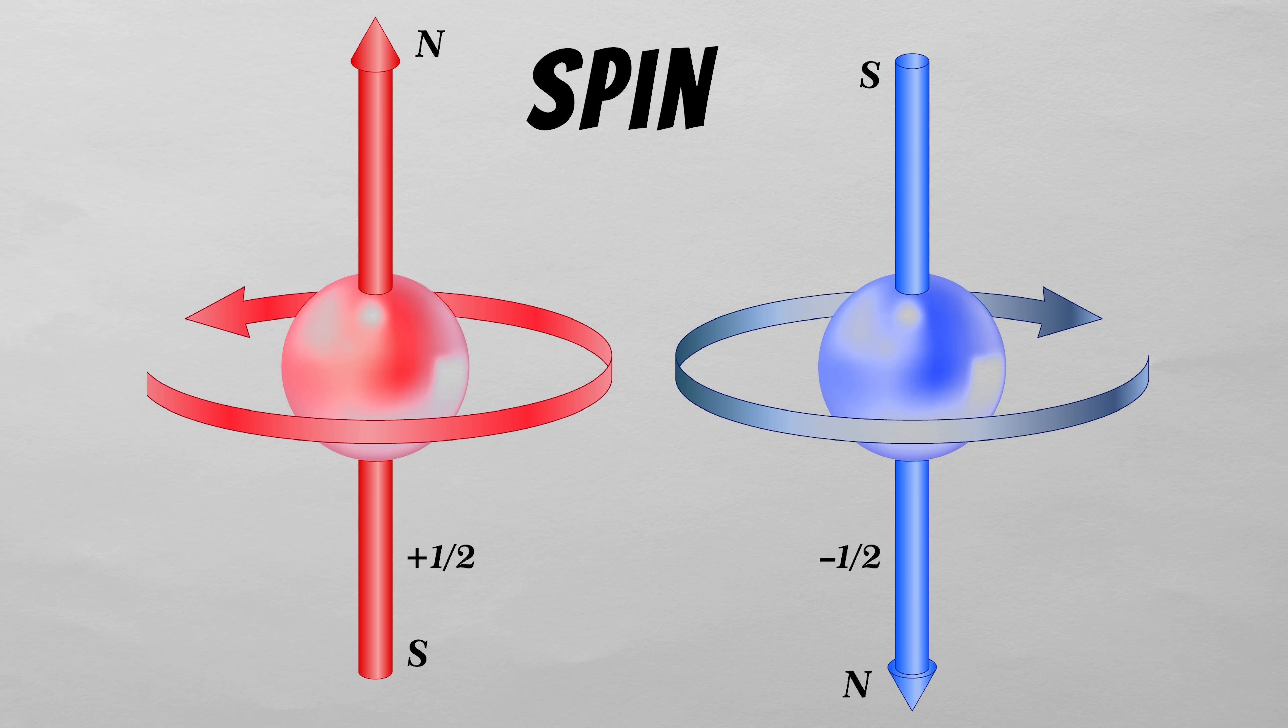But electrons have another more mysterious property as well called spin, which isn't actually any physical spinning motion, but rather it's an intrinsic angular momentum that exists as part of the electron itself.